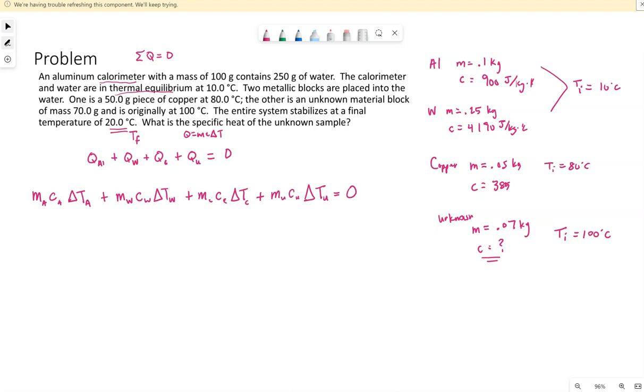So we actually know everything except for C. We know everything ends up at a final temperature of 20 degrees Celsius. We know the mass of everything. We know their initial temperature and the C values off the table for everything else. So let's plug in.